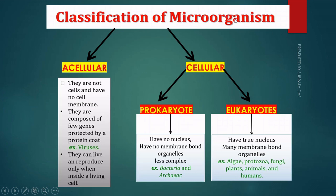In the classification of microorganisms, there are many parts. This is the acellular part and this is the cellular part. The acellular part means they are not cells and have no cell. They are composed of few genes protected by a protein coat. There are many genes and DNA content. This is the protein coat. For example, virus.